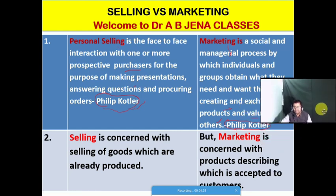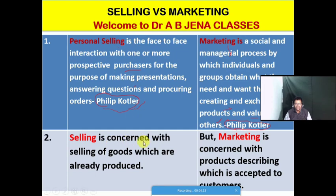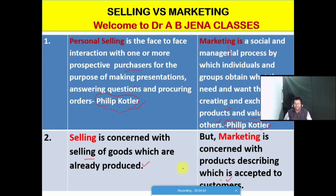The second basis point of comparison is: selling is concerned with the sale of goods which are already produced. But marketing is concerned with products that are acceptable to customers. So in the case of selling, the main activity is concerned with selling products which are already produced. But marketing not only includes selling but also describes why the customer will accept the products.